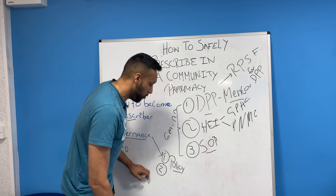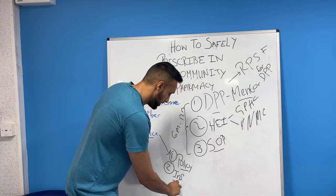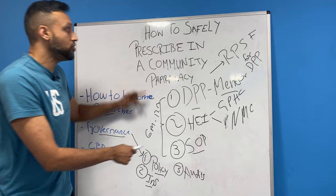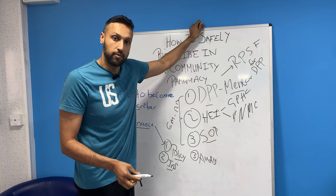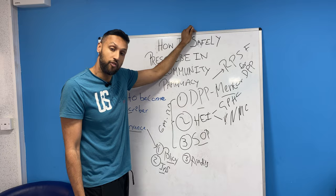Number two: once you have a policy, you need insurance in place — some sort of professional indemnity insurance. Number three: you need audits. How do you audit your work? You're the only healthcare professional prescribing — who's making sure that what you're prescribing is correct and evidence-based? Who's governing you to make sure everything is okay? You need some sort of audits in place.